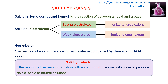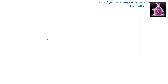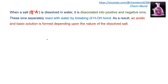Salt hydrolysis produces changes in pH, resulting in either acidic, basic, or neutral solution. When a generalized salt BA — where B is the cationic part and A is the anionic part — is dissolved in water, it dissociates into positive and negative ions. These ions separately react with water by cleavage of the H-O-H bond, and the acidic or basic solution formed depends upon the nature of the dissolved salt.